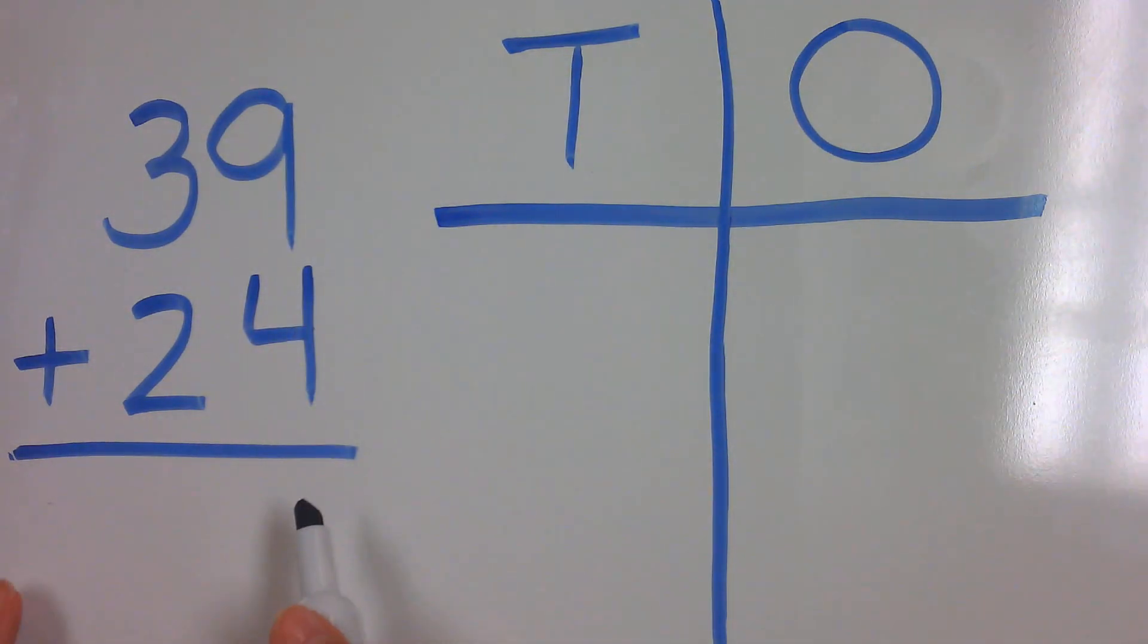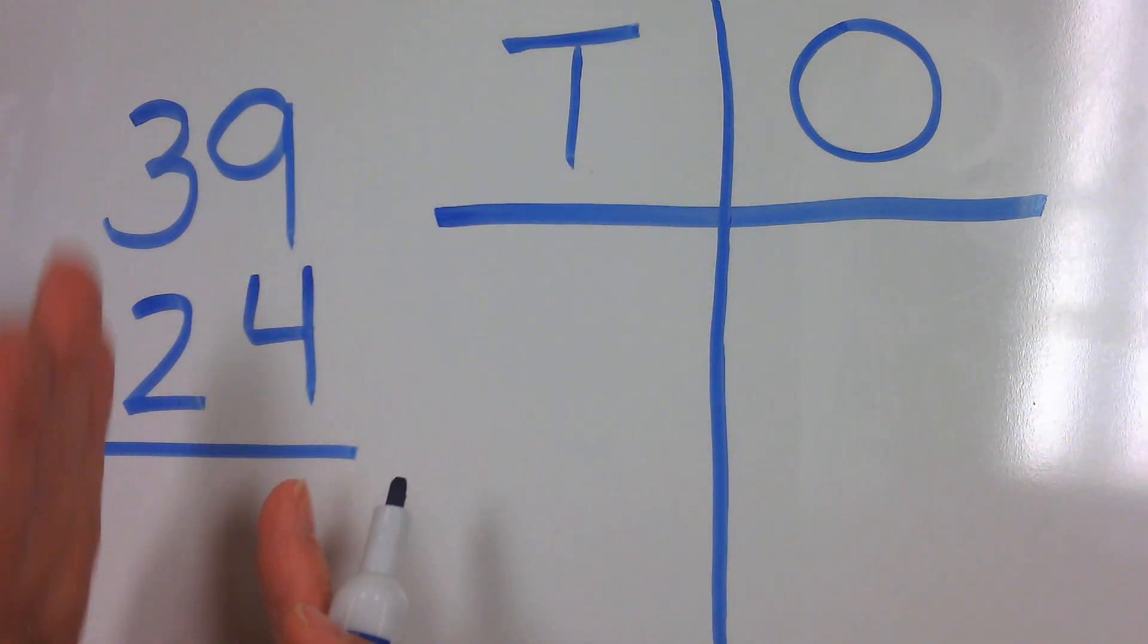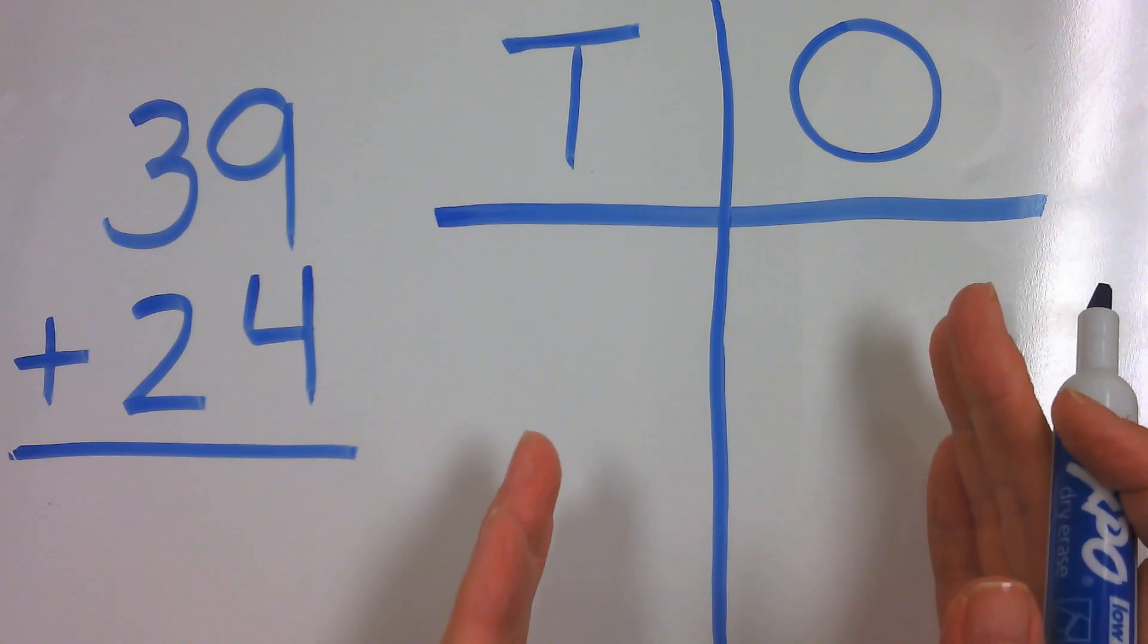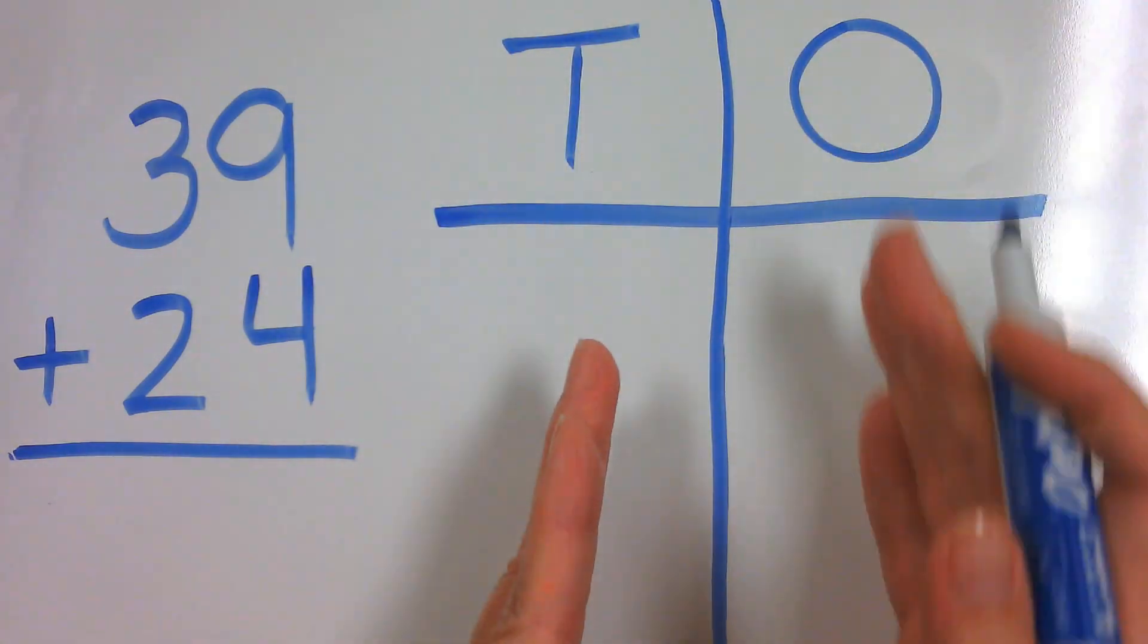So I've written my problem vertically. When you write your problem, make sure that your ones are lined up and your tens are lined up. And then I made a chart to draw my tens and ones.